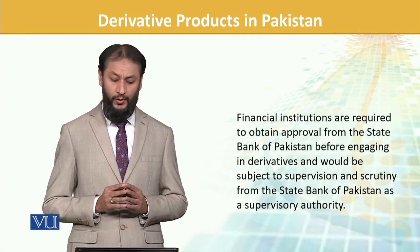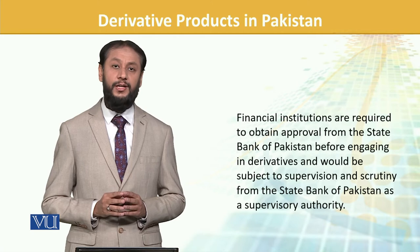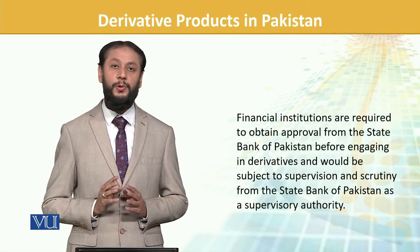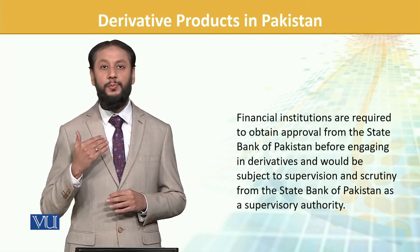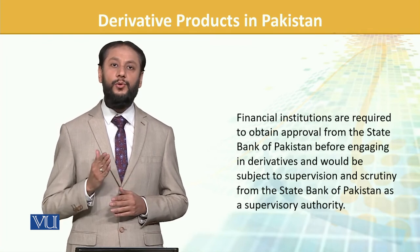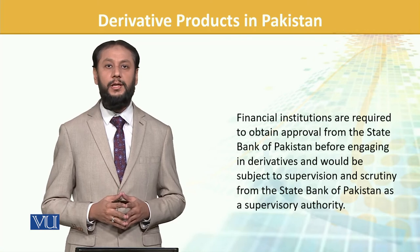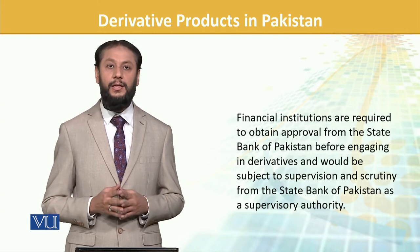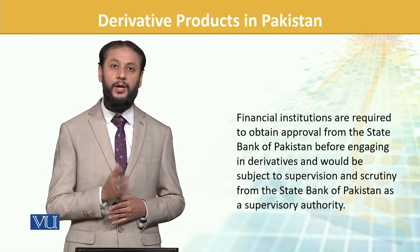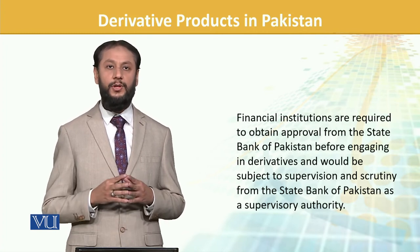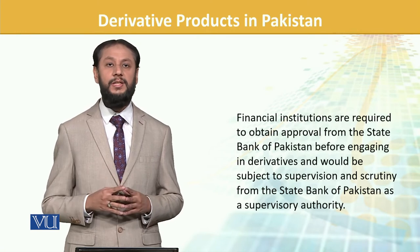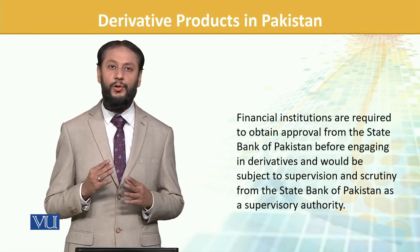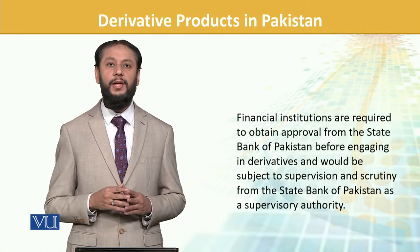Financial institutions are required to obtain approval from the State Bank before engaging in derivatives, and would be subject to supervision and scrutiny from the State Bank as the supervisory authority. Any bank that wants to operate majorly on these instruments must get proper licensing and also provide proper intimation and reporting — a monthly reporting cycle with prescribed forms — because this is a less frequent, market-specific area with huge amounts involved, and there is a proper regulatory wing looking after it.